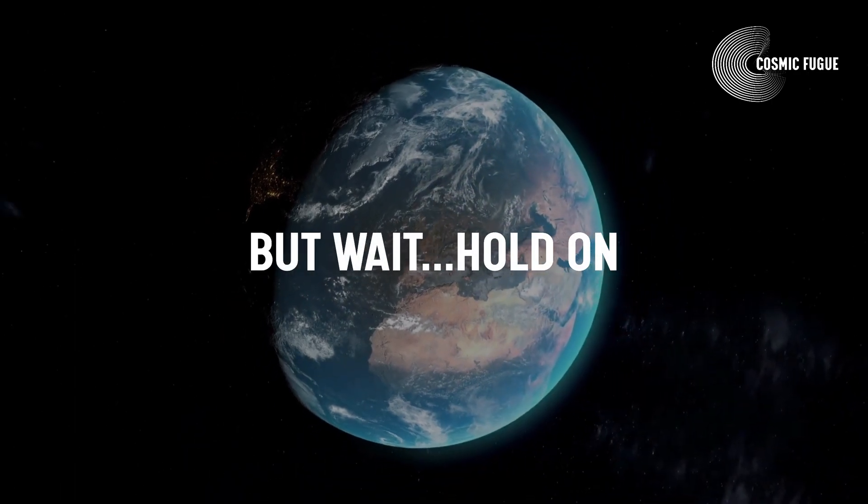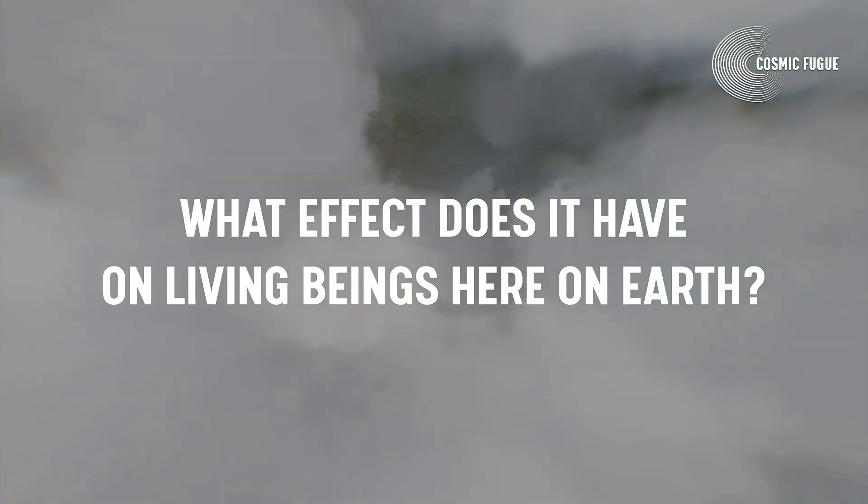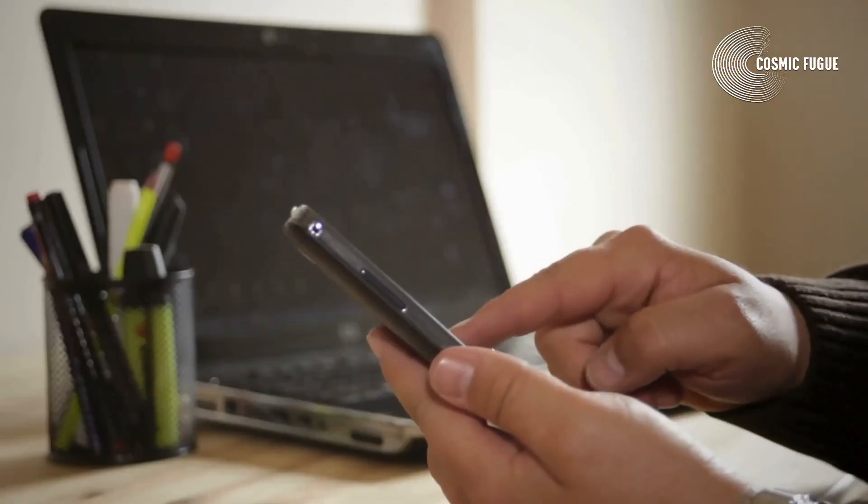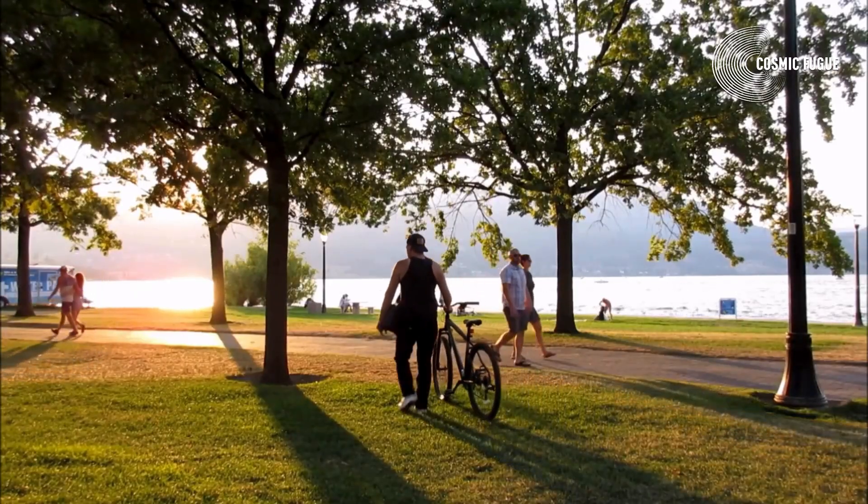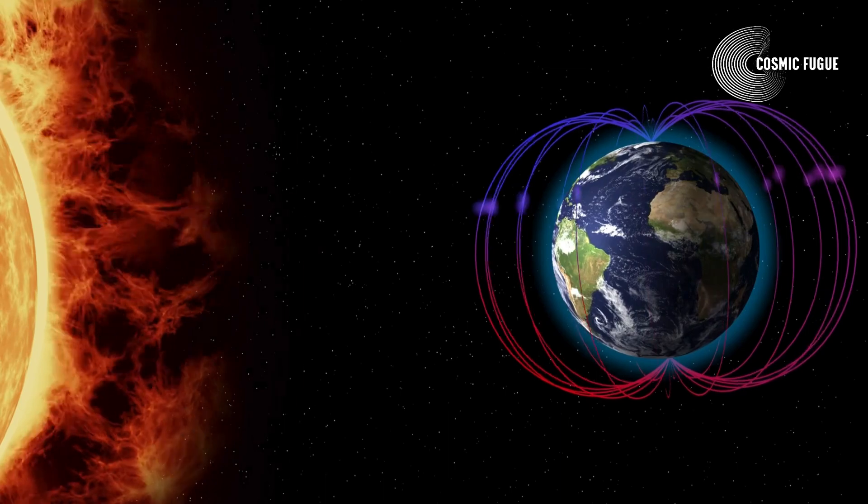But wait, hold on. What effect does it have on living beings here on Earth? Well, solar storms could disrupt technical devices, but they cannot harm our human bodies as long as we remain on the surface of Earth, where we're protected by Earth's blanket of atmosphere.